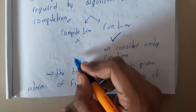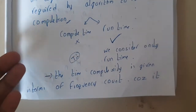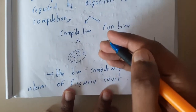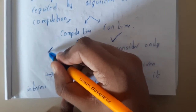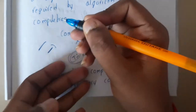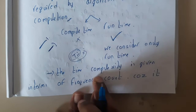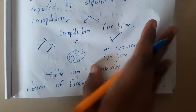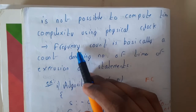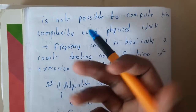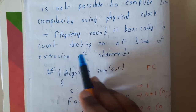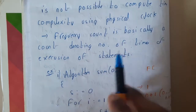Whenever you hear the word 'time,' it is normally measured in milliseconds or nanoseconds, but we will not be using those kinds of measurements here. We will be using the frequency count — how frequently a statement is executed. If it is in a for loop, it will be executed many times; if it is just an initialization, it will be executed once. Time complexity is given in terms of frequency count because it is not possible to compute it using a physical clock.